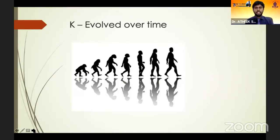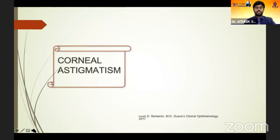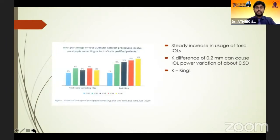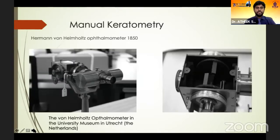Keratometry has always been evolving over time. Corneal astigmatism is present in about every third patient that we operate — this was from a study published in Eurotimes 2020. I was surprised to find that the prevalence of astigmatism correction was gradually increasing over time, more so than presbyopic IOLs. This shows that keratometry is still the king.